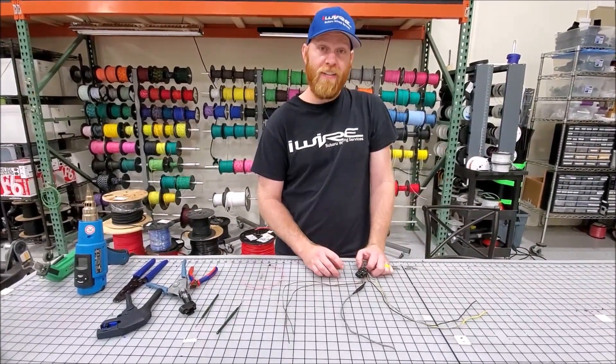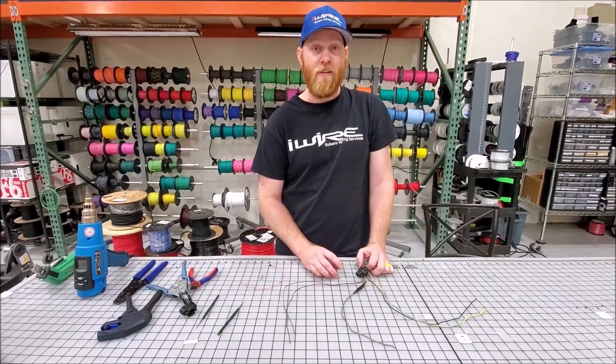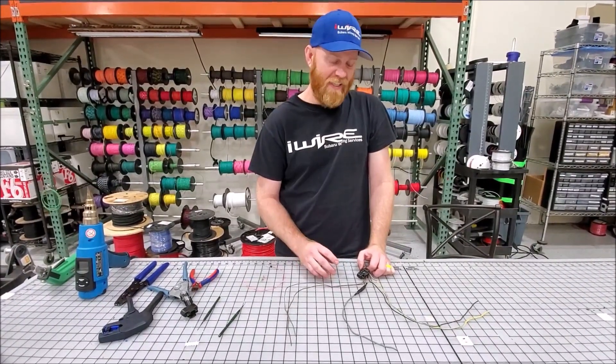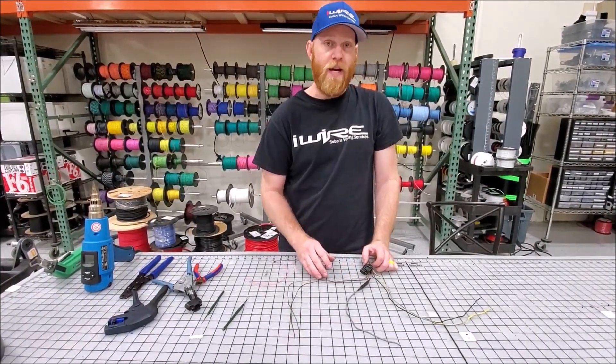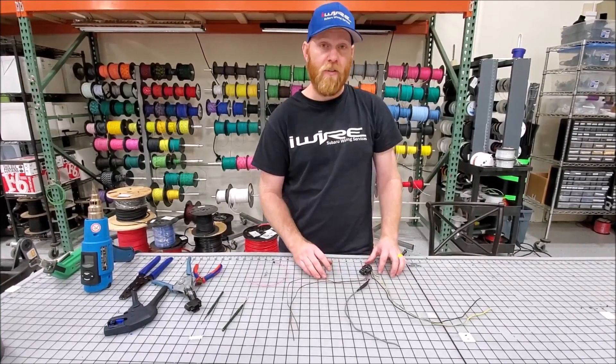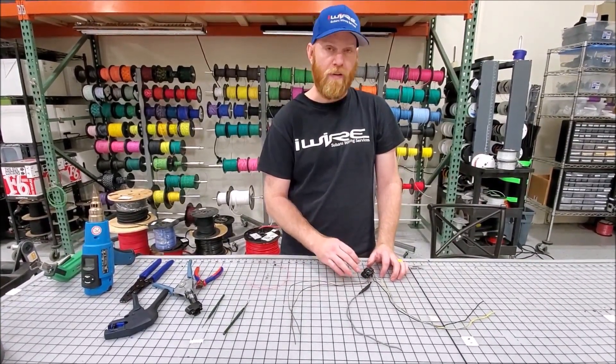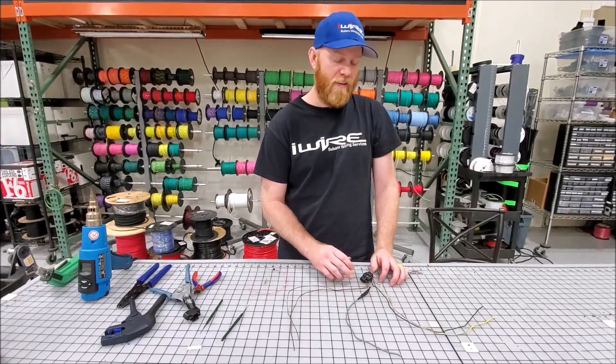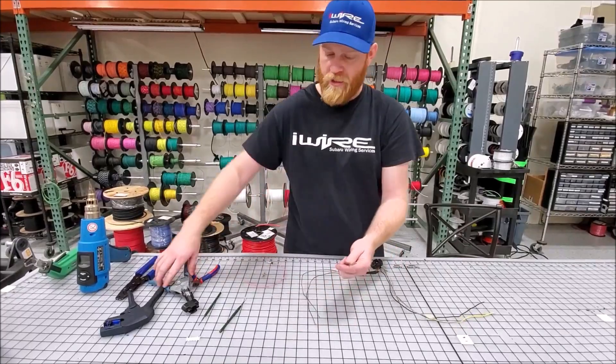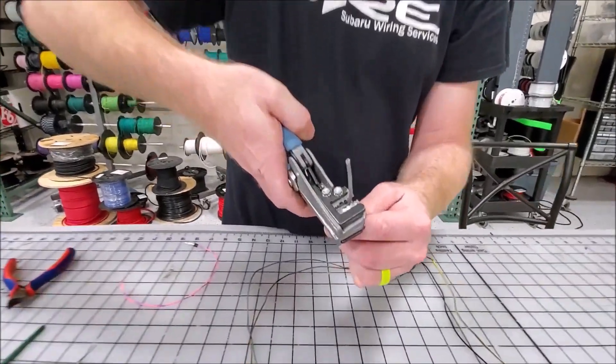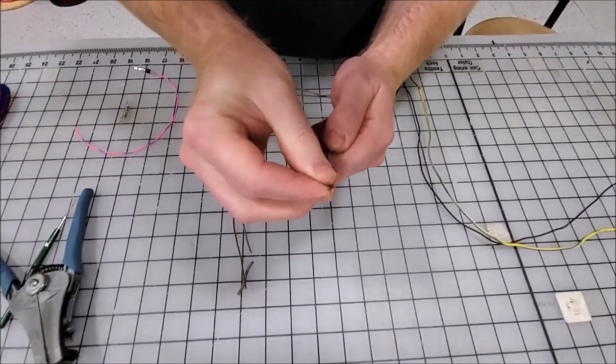A shielded wire is a signal wire that is protected from outside noise. The reason that we do that is because sometimes other wires around it create electrical noise that could interfere with the signal wire that we really care about, in this case the MAF. So how they do this is they put a layer of mesh or a drain, sometimes called a drain wire, around the signal wire.